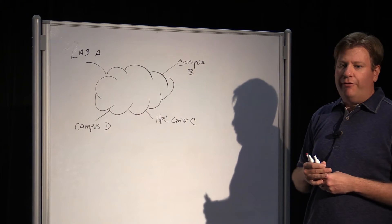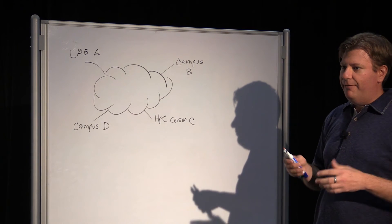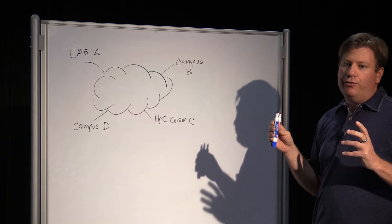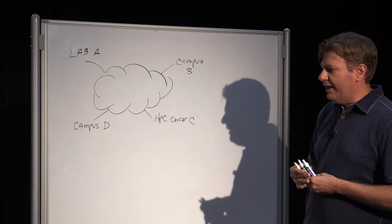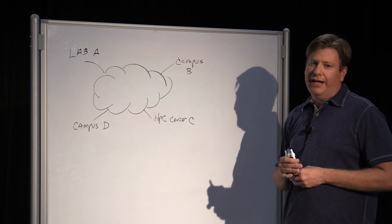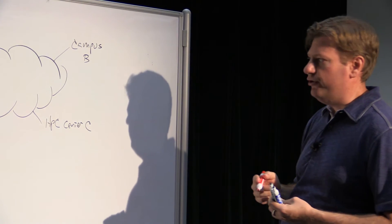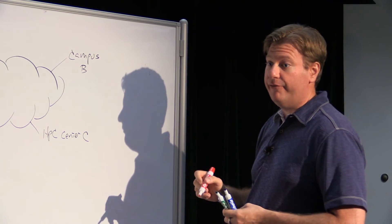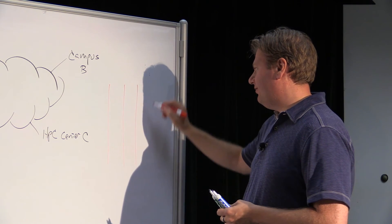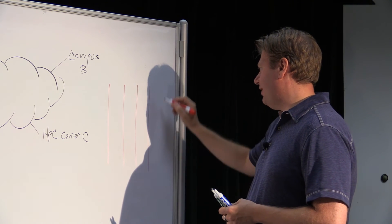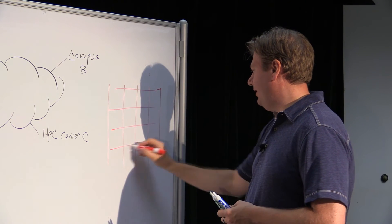So the MadDash software component of the perfSONAR toolkit was designed to allow us to have a matrixed view of what performance looks like between multiple locations. In the next series of videos, we're going to be looking at this software. We want to have a real-time notion of what performance looks like between the different participants in this mesh, and it's possible to create a dashboard application that ranks and visualizes the performance between each of these.